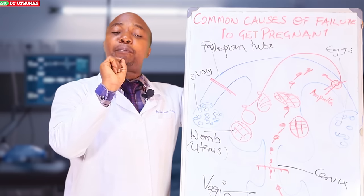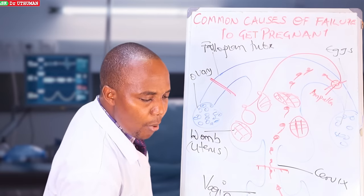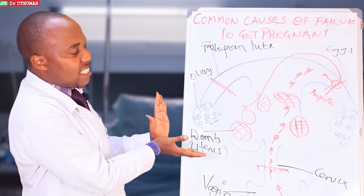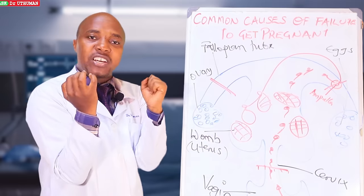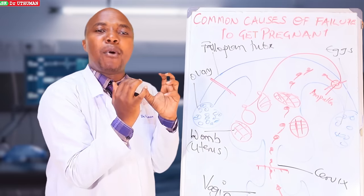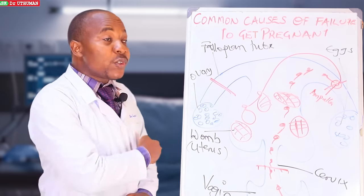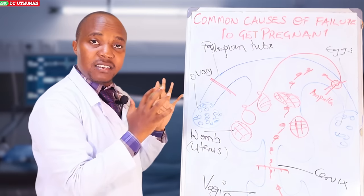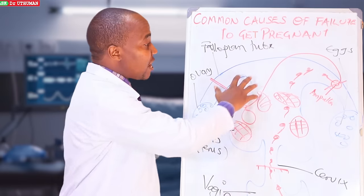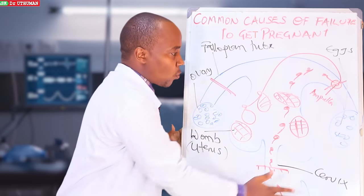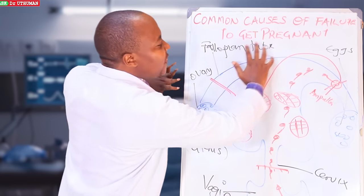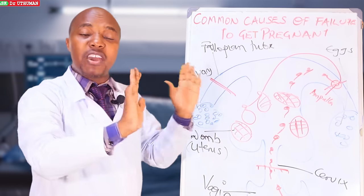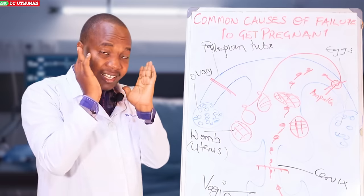Still looking at pathological causes: it can also be as a result of hormonal imbalance. If you have a problem with hormones, I want to relate the female reproductive system to a motor vehicle. What you see when you look at a car is the structure, like the uterus. Let's assume the structure is okay — no blockage, the eggs are there, the female reproductive system looks normal. That is how you see the car.